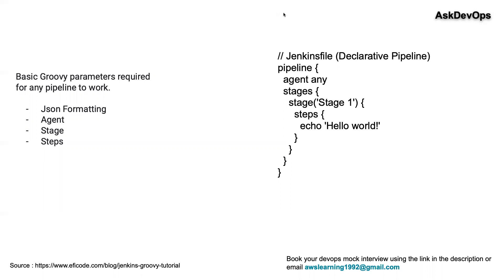In Groovy scripting, the minimum required parameters that must be present for the pipeline not to fail are: first, proper JSON formatting; second, mentioning of agents — it can be any or certain agents, but it has to be mentioned; third, stage — what are the different stages my pipeline needs to have; minimum there has to be one stage, if there is no stage there is no pipeline; and fourth, a step — minimum one step has to be present if you mention a stage. You cannot have a stage that doesn't do anything. So JSON formatting, agents, stage, and steps are all required in a Groovy script as the minimal requirements for it to function and not fail.